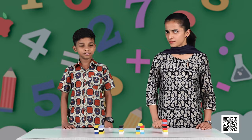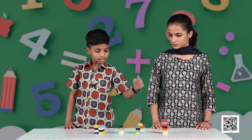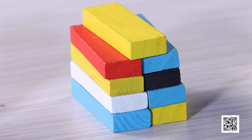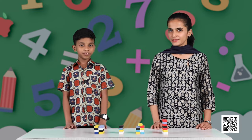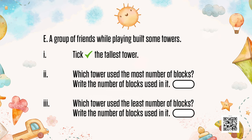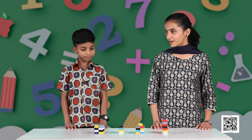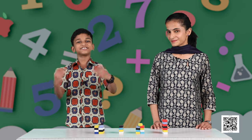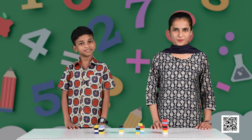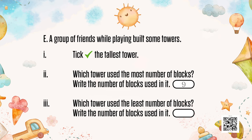So which tower has used the most blocks? This tower — and we write the number 9. Another question we leave for our friends: which tower has used the least number of blocks? That means the minimum number of blocks used in the tower — you have to find it.